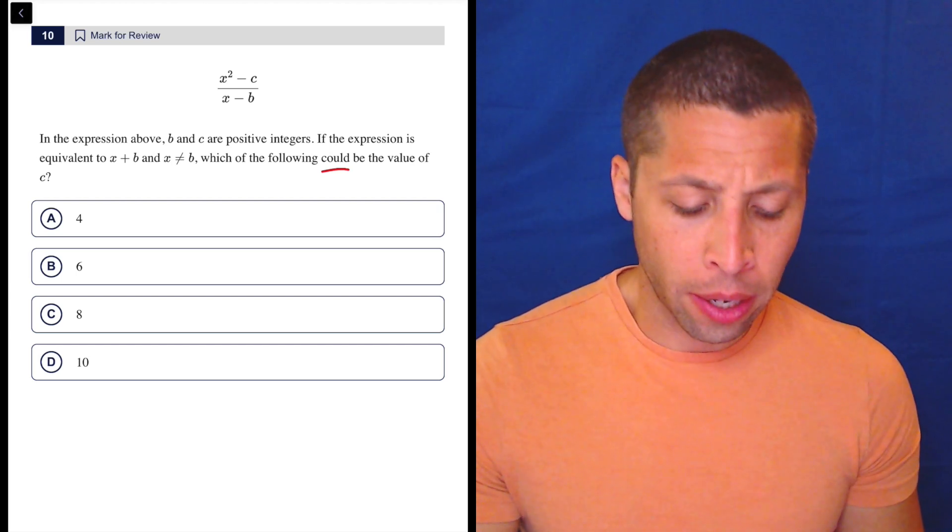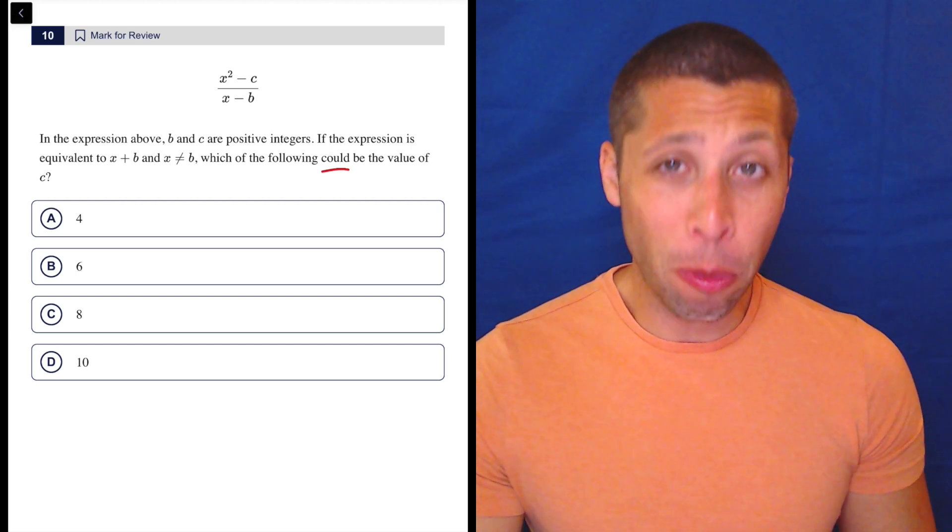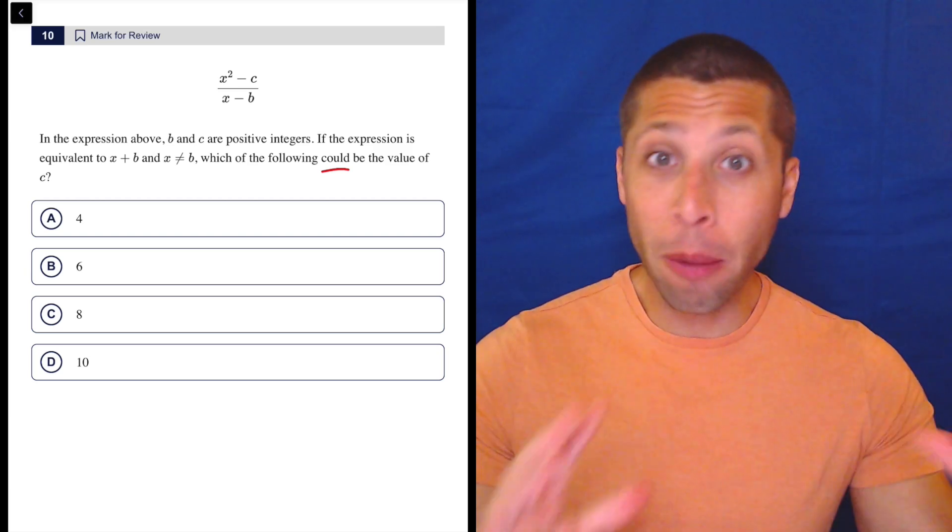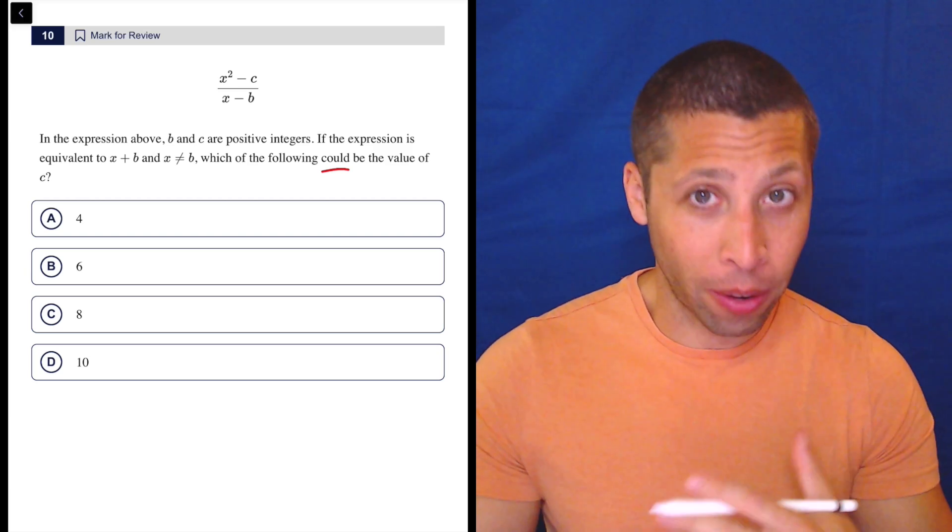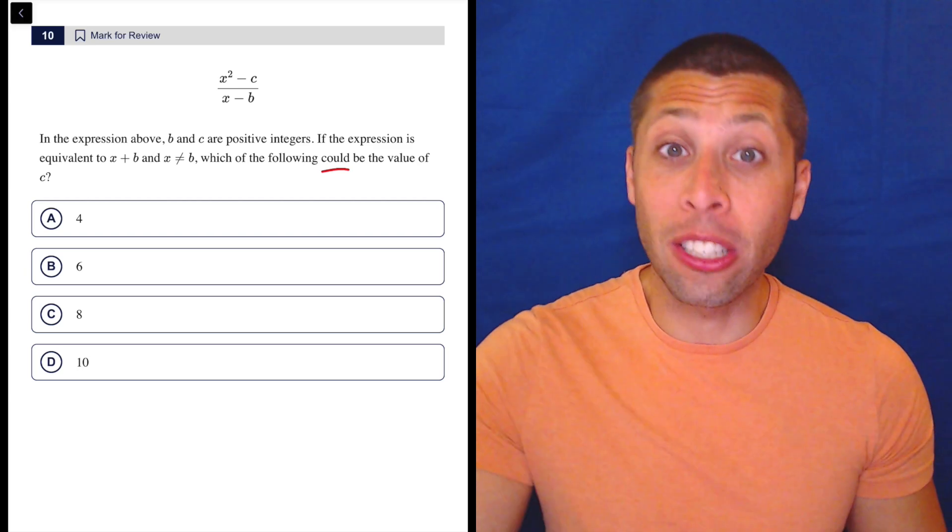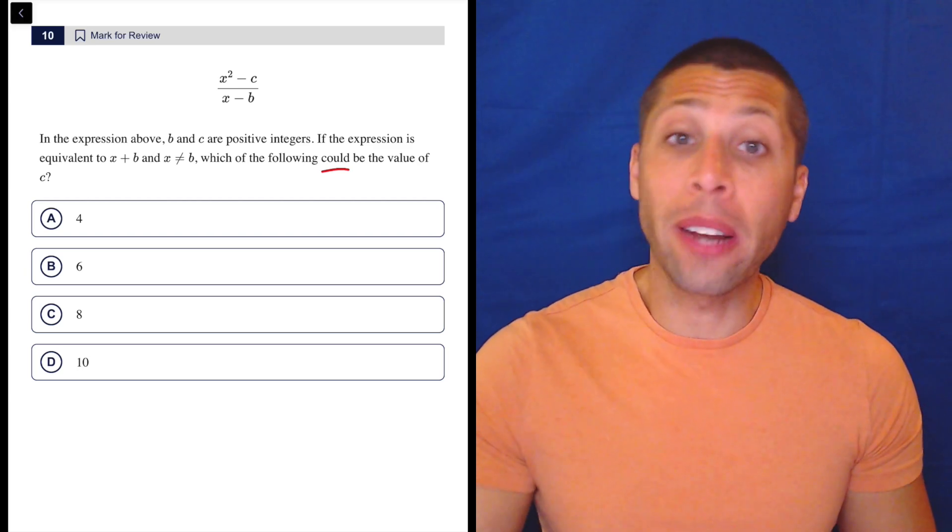The word 'could' is changing things up here. Which of the following could be the value of C? When they use that word, what they're saying is there are multiple possible values of C, but only one of them appears in these answer choices. And for some reason, the others are wrong. So it's hard to know then. Basically, we're not going to be able to necessarily solve for C, which is one of the benefits of arithmetizing.